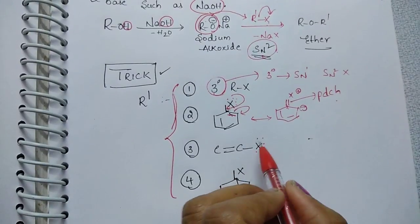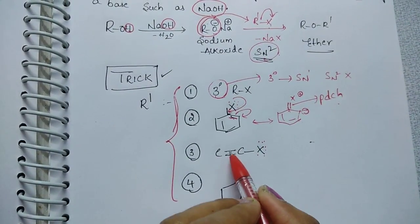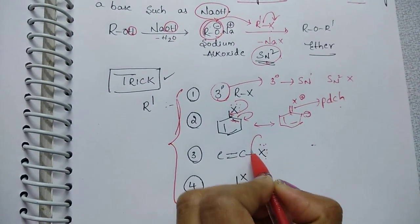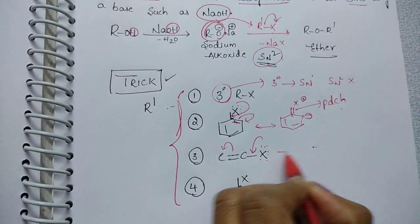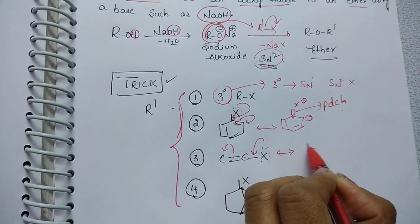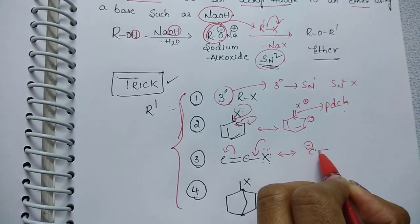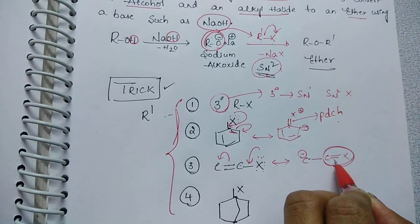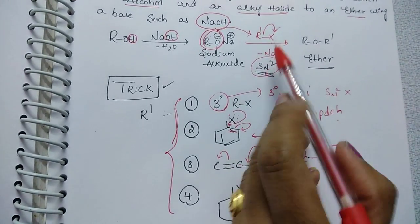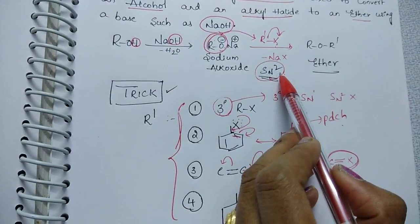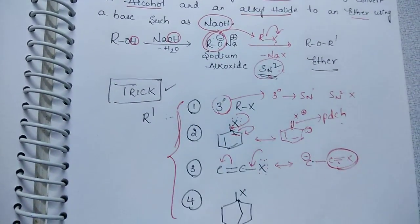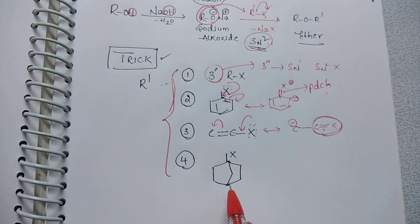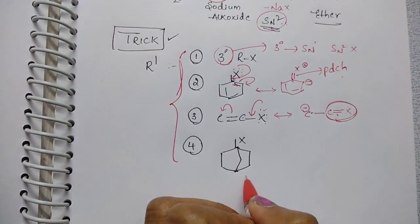Similarly, in the case of a vinyl halide, the lone pair and pi bond are in conjugation, so resonance takes place and the C–X bond gets partial double bond character. When it has partial double bond character, the halogen cannot leave as a good leaving group, and SN2 mechanism does not take place.